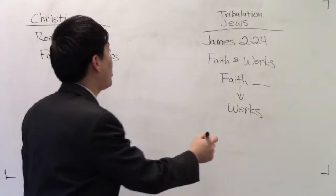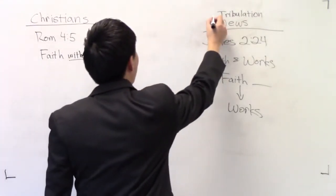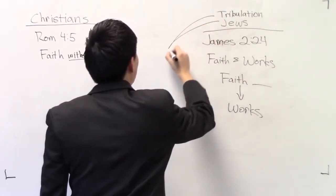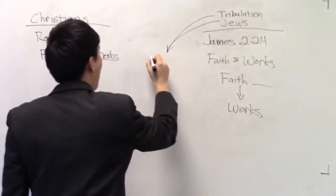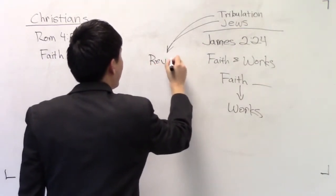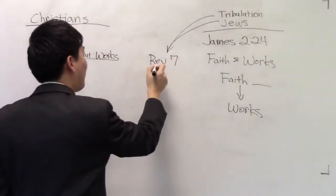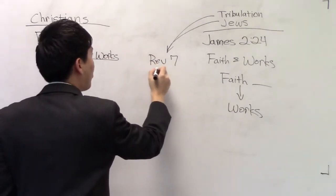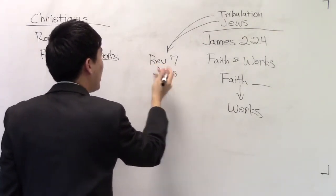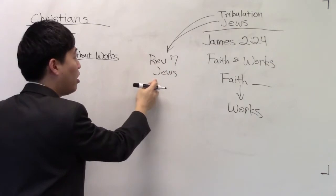You know why this definitely matches up? Because all you have to do is when... Scripture interprets Scripture. They all build upon each other. Here's a question. Then why does Revelation 7 mention about the 12 tribes of Israel, the Jews? Why does it mention that in the tribulation?